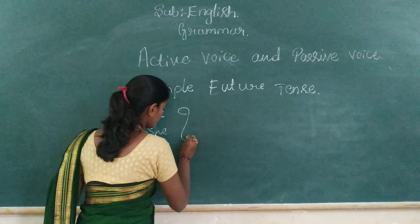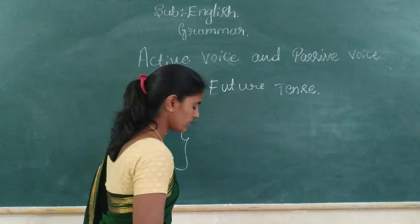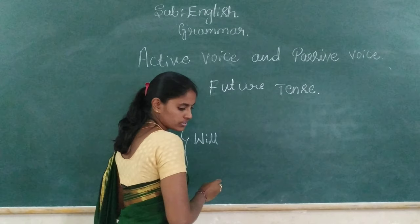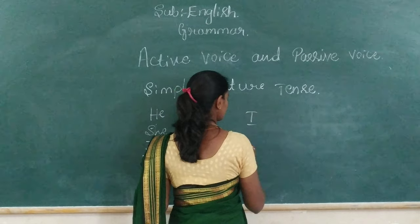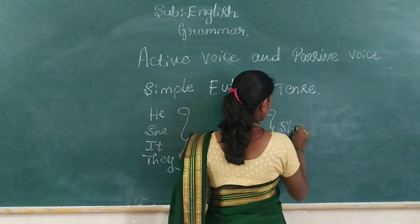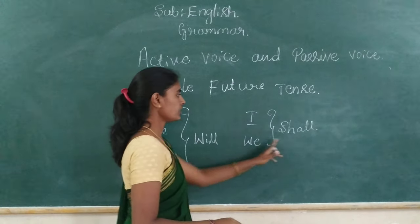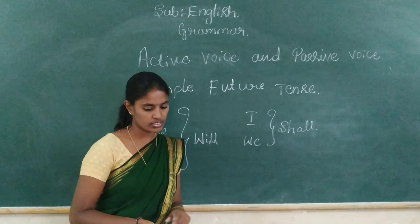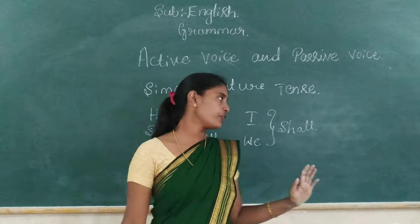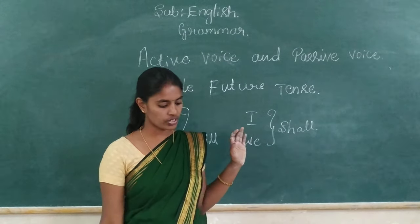All these things we use. Will. Then I, we — shall. He, she, it, they will; and I, we shall — we use. Understand. These modal auxiliaries — will and shall — are the modal auxiliaries we use.